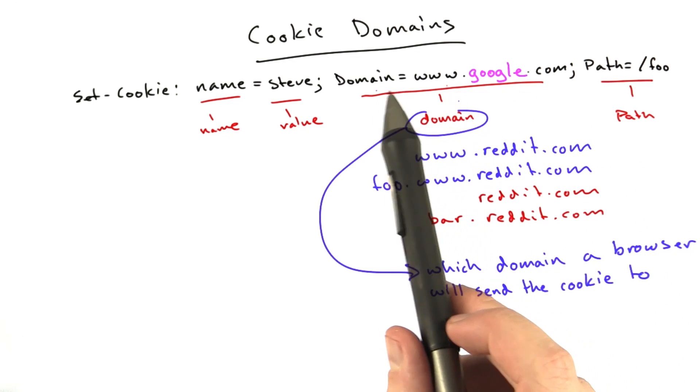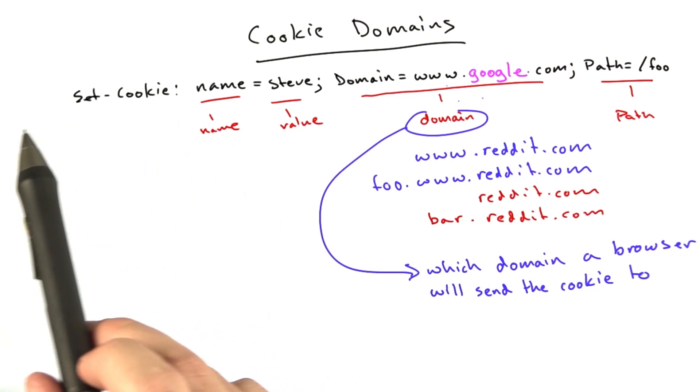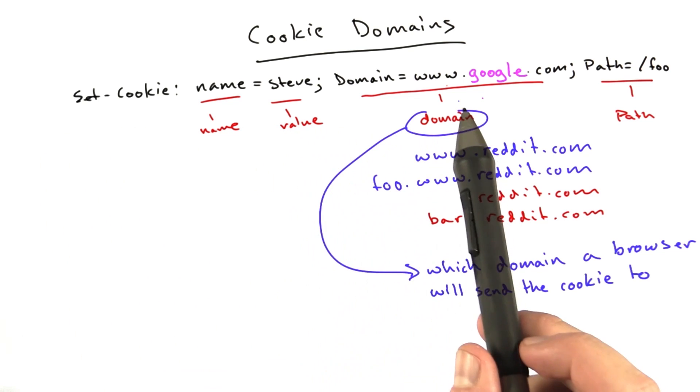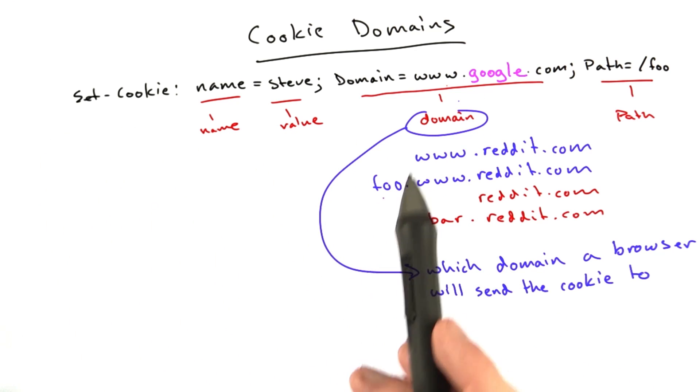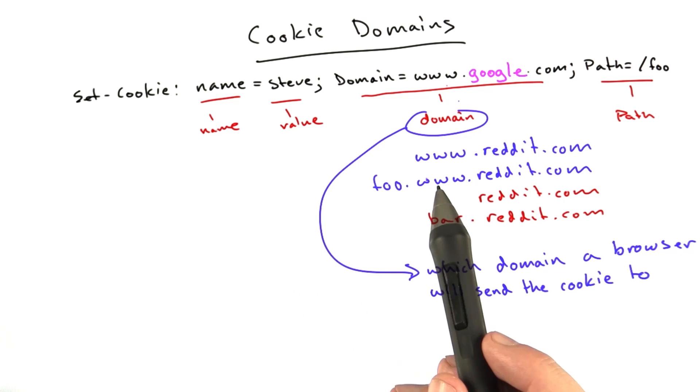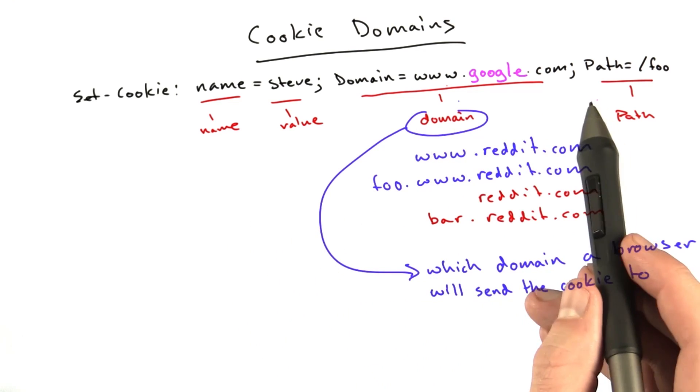Similar to how the domain parameter restricts which domains a browser will send a cookie to, the domain that's serving the request—basically the domain of the web server of the web page—you may only set a cookie to that domain or higher.